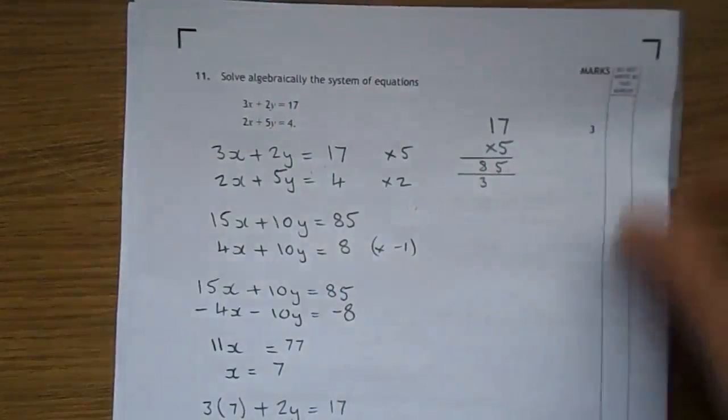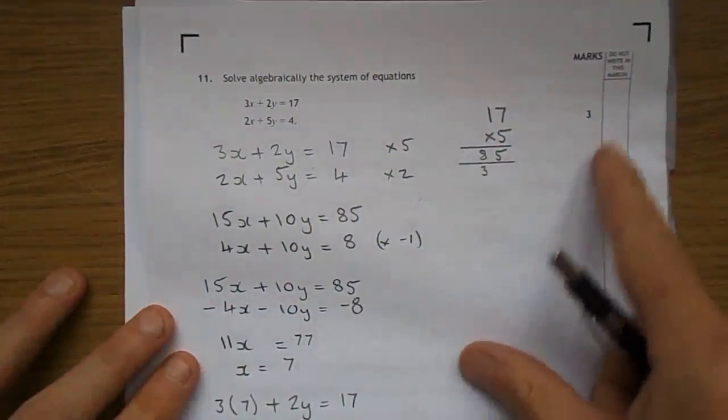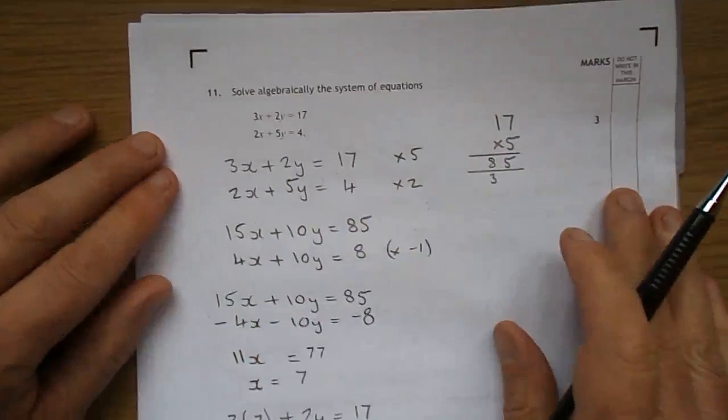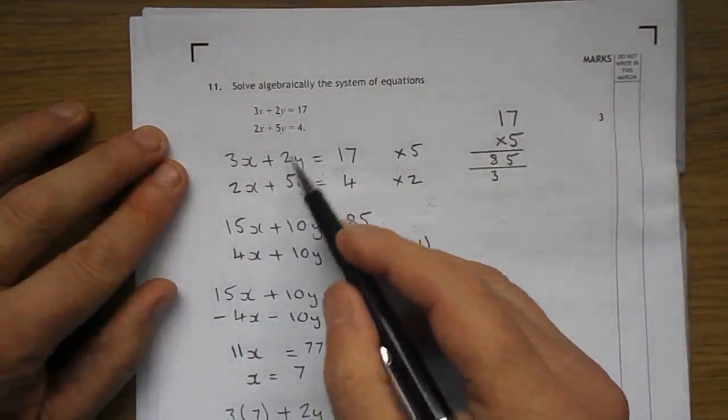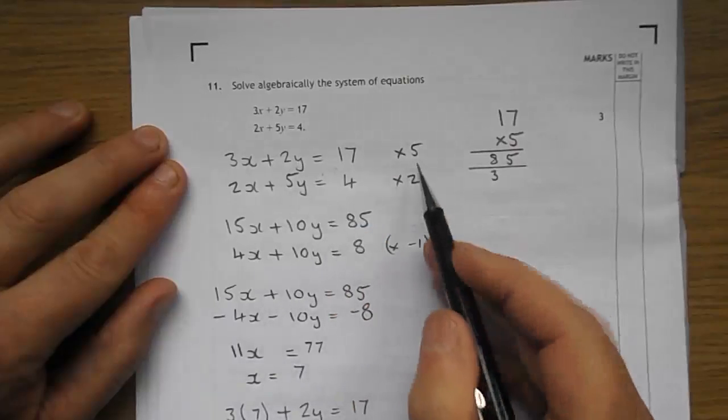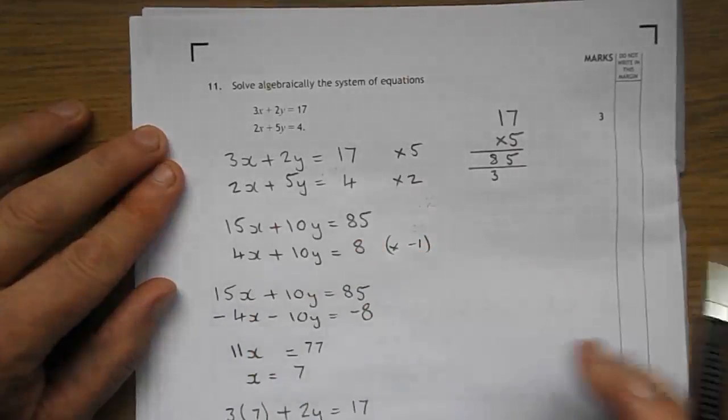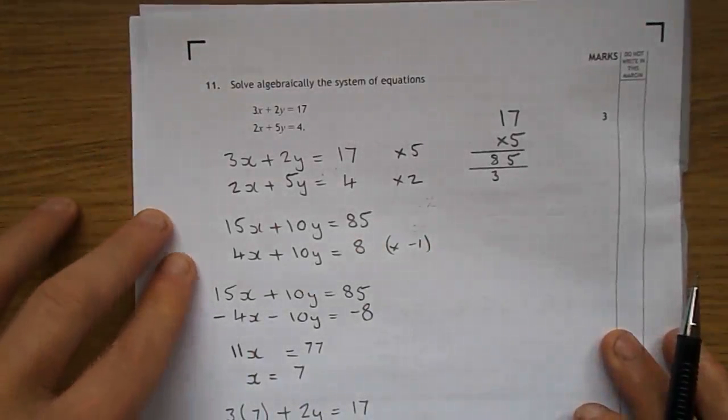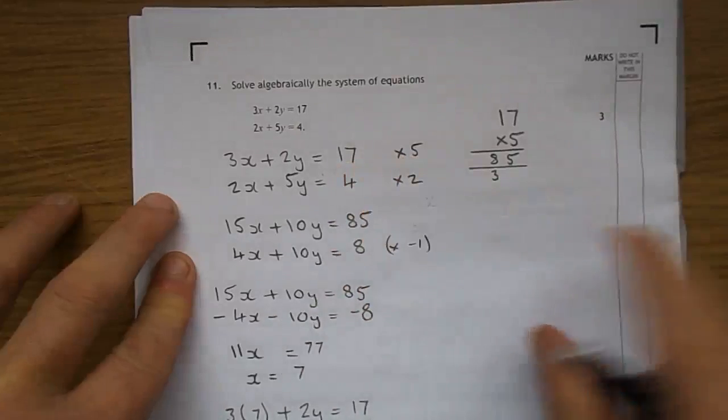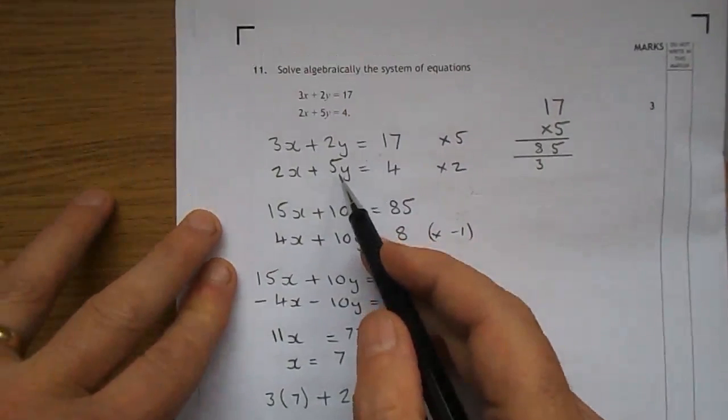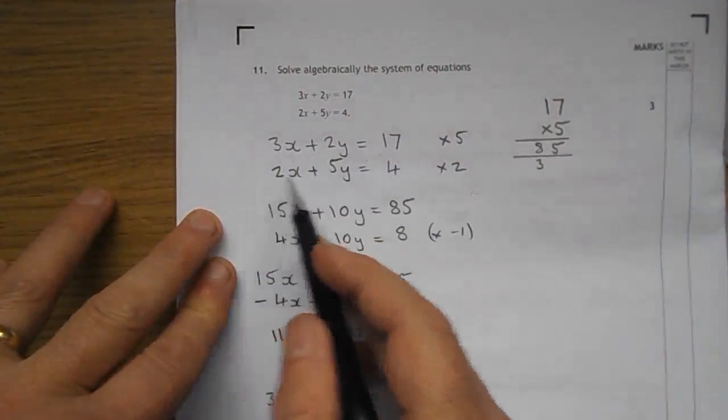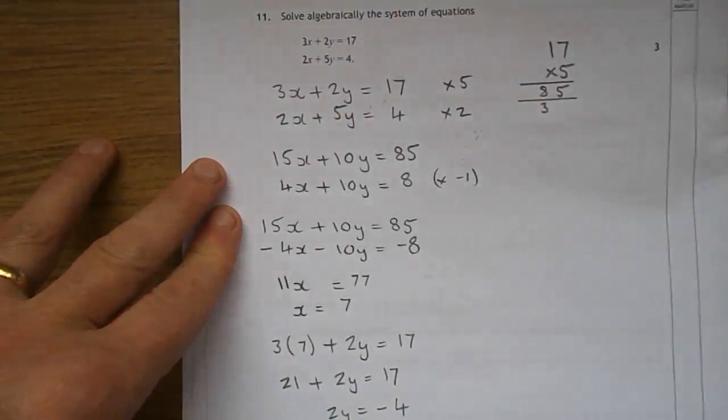Question 11 was a pretty straightforward simultaneous equation. I've written it out bigger so you can see it. My tactic is to make them both 10y. 5 times the first equation: 15x plus 10y equals 85. To make 5y into 10y you double it, so double the whole lot: 4x plus 10y equals 8.